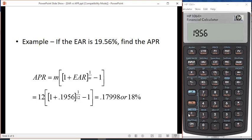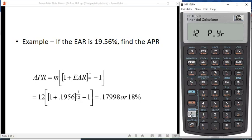Let me just clear everything: shift, clear all. It's already set for 12 periods per year. Let's type in 19.56 and we'll put it in as the effective rate, which is under the PV key, and then we can compute the nominal rate and we get 18%.